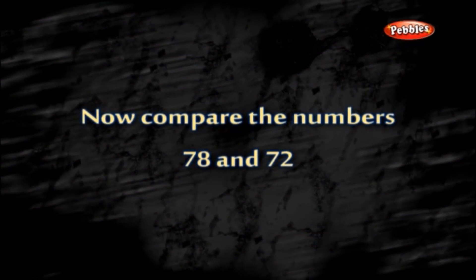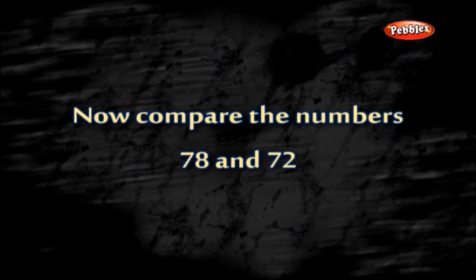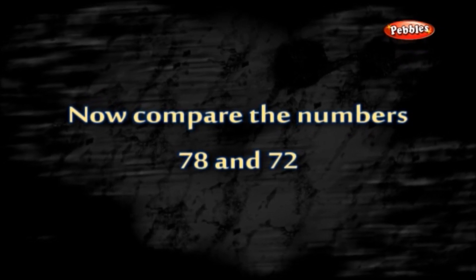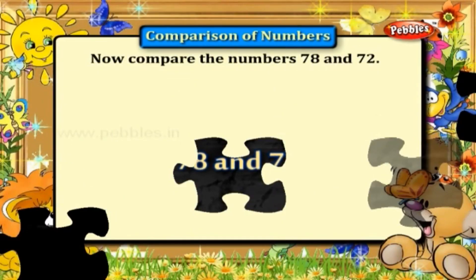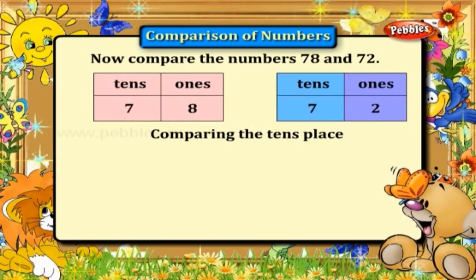Now compare the numbers 78 and 72. In 78, 7 is in the tens place, and in 72, 7 is in the tens place. When you compare the tens place, you get 7 equal to 7.